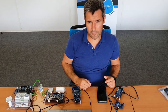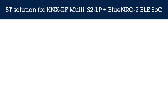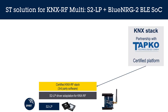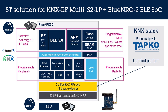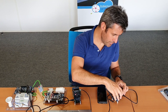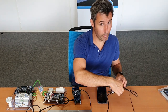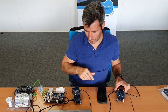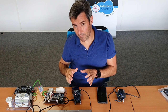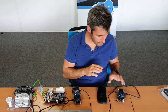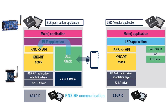The ST KNX RF multi-certified solution has been built using the S2LP transceiver board with integrated balun on the inside, and the BlueNRG-2 evaluation kit. In this demonstration, we plug the S2LP expansion board on top of the BLE board for a push-button application connected to a smartphone. For simulation of a KNX RF light application, we use the same setup but add a STM32 Nucleo board with an LED driver on top.